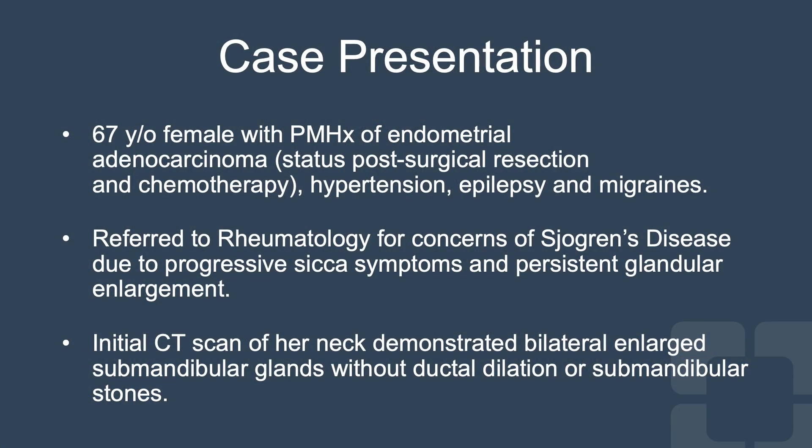We have a 67-year-old African-American female with a past medical history of endometrial adenocarcinoma, status post-surgical resection and chemotherapy, hypertension, epilepsy, and migraines, who was referred to our clinic for concerns of Sjogren's disease due to progressive SICA symptoms and glandular enlargement.